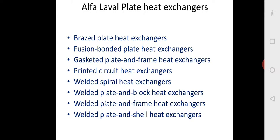If you visit any dairy industry or distillery, they use Alpha Laval — an Indian company which produces different types of plate heat exchangers. These include brazed ones for small heat exchangers, then fusion bonded, gasketed, printed circuit, welded spiral, welded plate and block, welded plate and frame, and welded plate and shell — these are the various types manufactured by Alpha Laval.